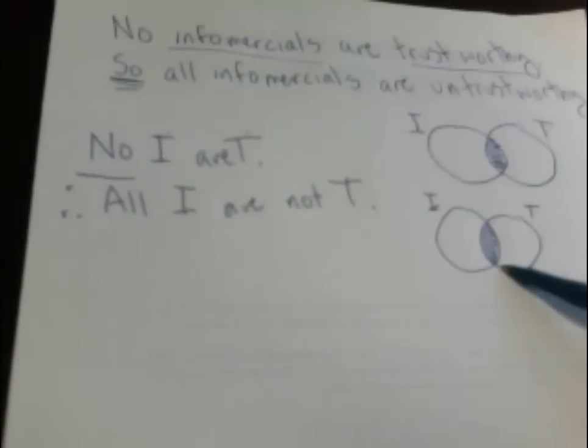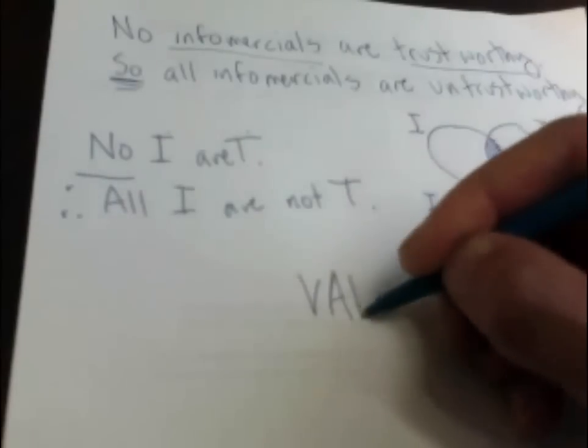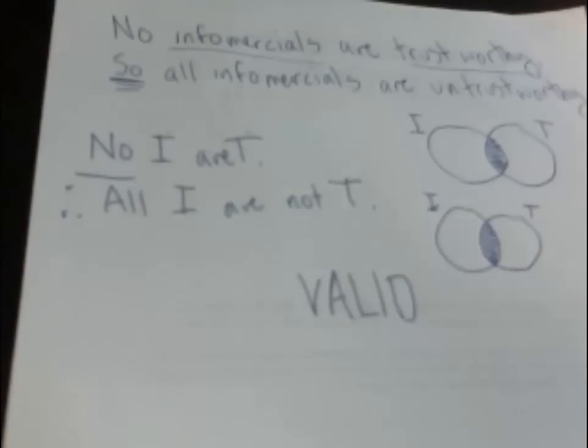Now, this is what the conclusion looks like. This is what the premise looks like. If the premise is true, the conclusion must also be true. So this argument is valid, and we just demonstrated it with a Venn diagram.